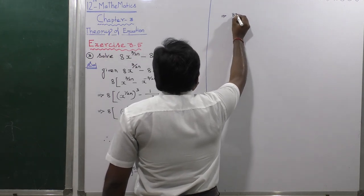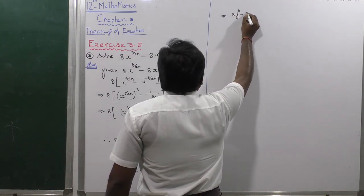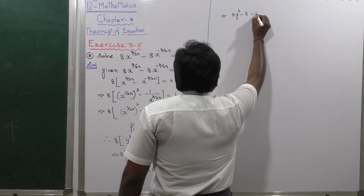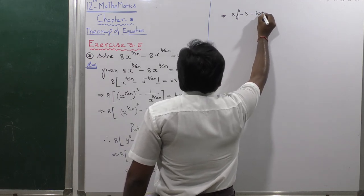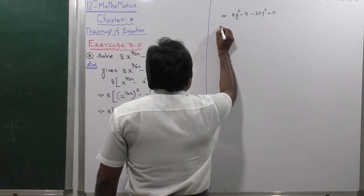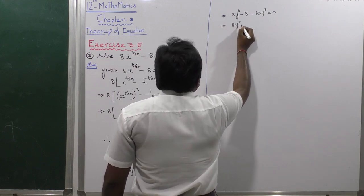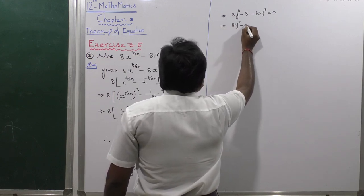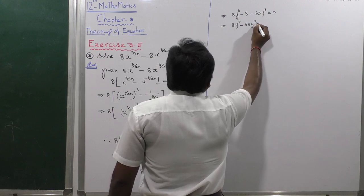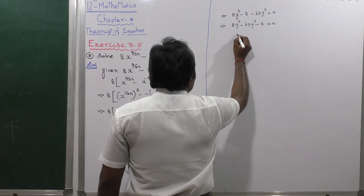Which implies that 8y power 6 minus 8 minus 63y cubed is equal to 0. Rearranging: 8y power 6 minus 63y cubed minus 8 is equal to 0.